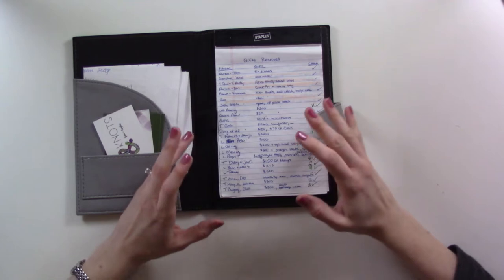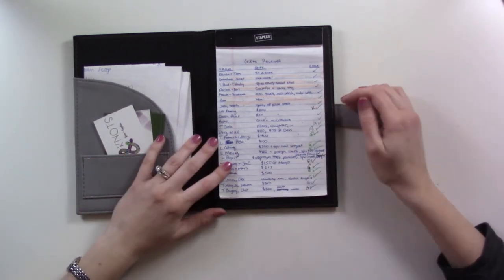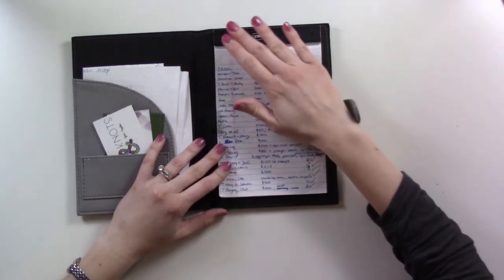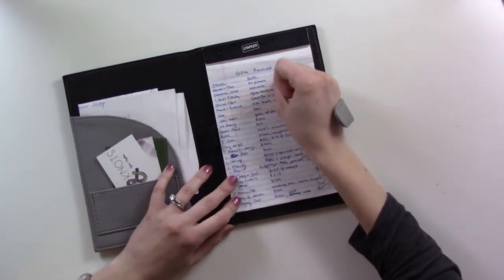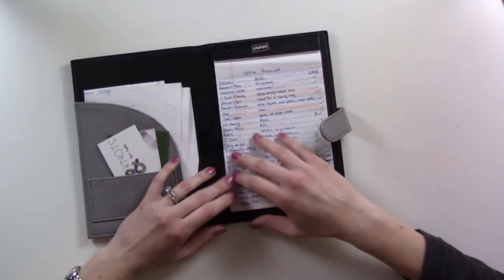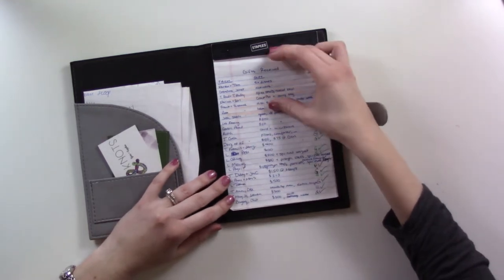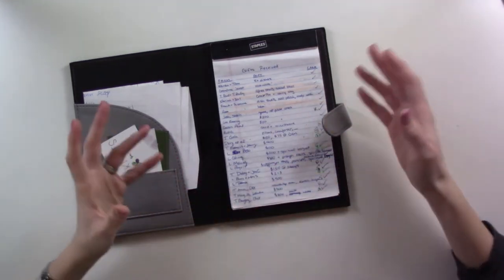Basically I was bullet journaling before I knew what a bullet journal was. I had a page at the front, one page for each month, and I went through and wrote down the things that I wanted to get done each month. Then after that I had each month split up into weeks and I did it like that.